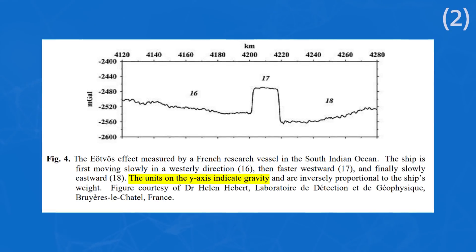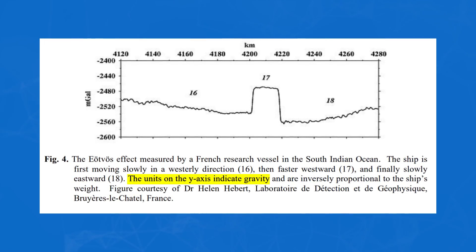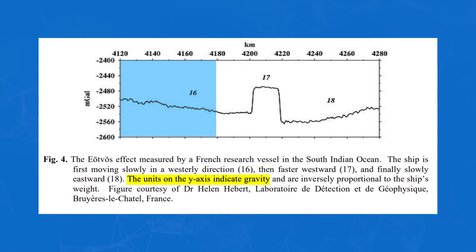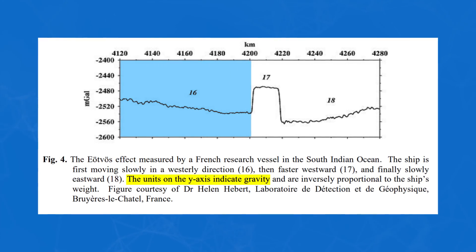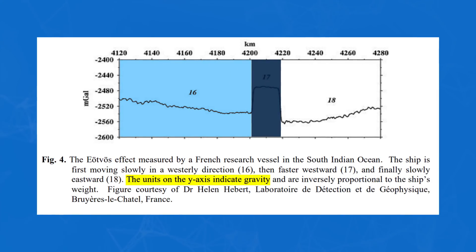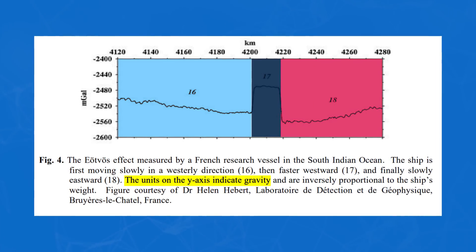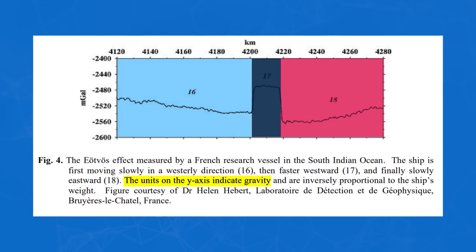You can actually see this really clearly in a graph from a repeat experiment in 1908. Originally, the science ship is moving slowly westward, then quickly westward, then reverses direction and moves slowly eastward. Overall, the ship experiences a change in gravity of around a hundredth of a percent.